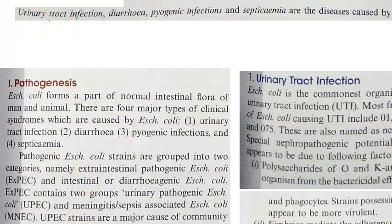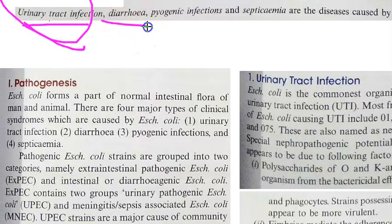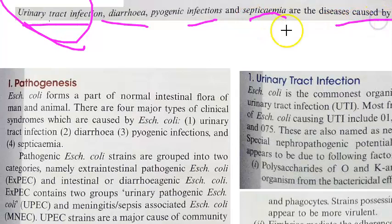E. coli is a common cell within us — it is a normal living flora. However, it can become pathogenic and cause urinary tract infection, diarrhea, pyogenic infections (that is pus-forming infections), and septicemia. These are the diseases caused by Escherichia coli.